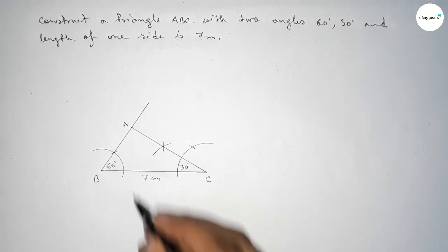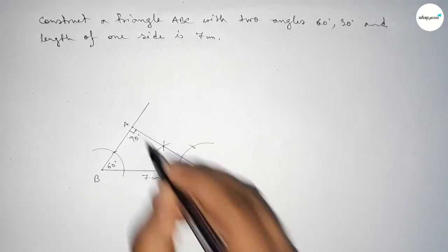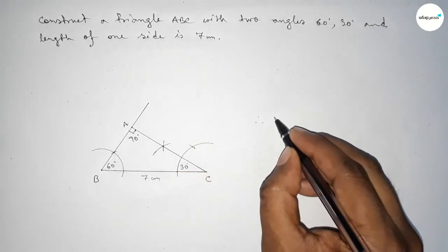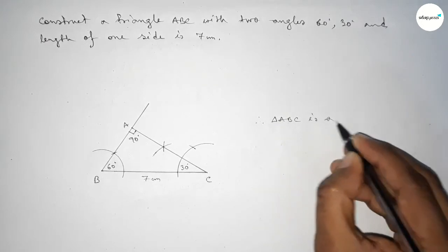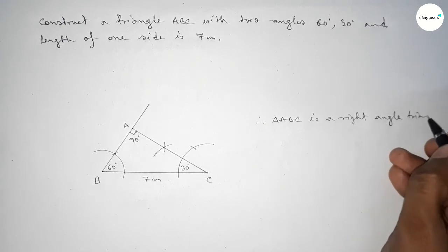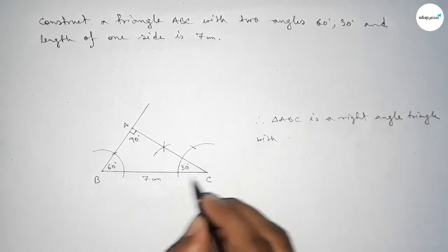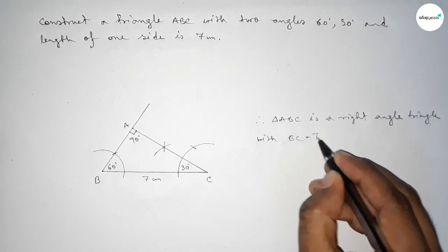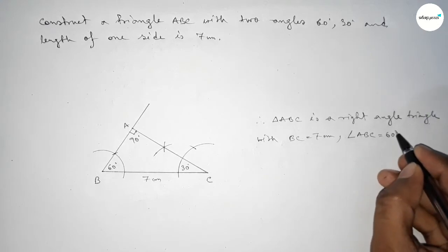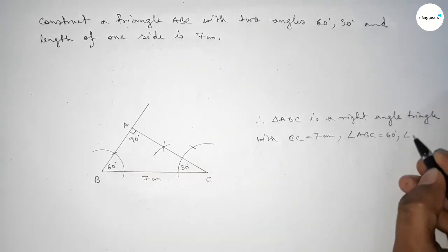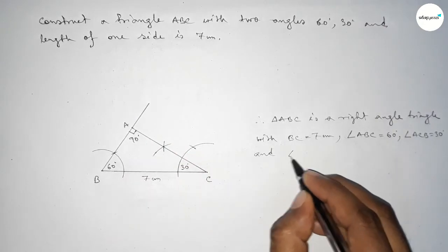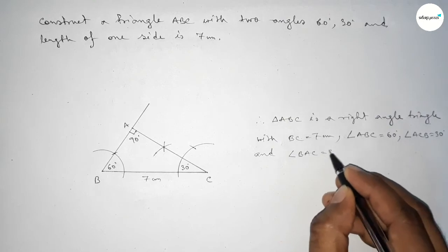And this angle is obviously 90 degrees, since 30 plus 60 equals 90, and 90 plus 90 equals 180. So therefore, triangle ABC is a right angle triangle with given side BC equal to 7 centimeters, angle ABC equal to 60 degrees, and angle ACB equal to 30 degrees, and angle BAC equal to 90 degrees.